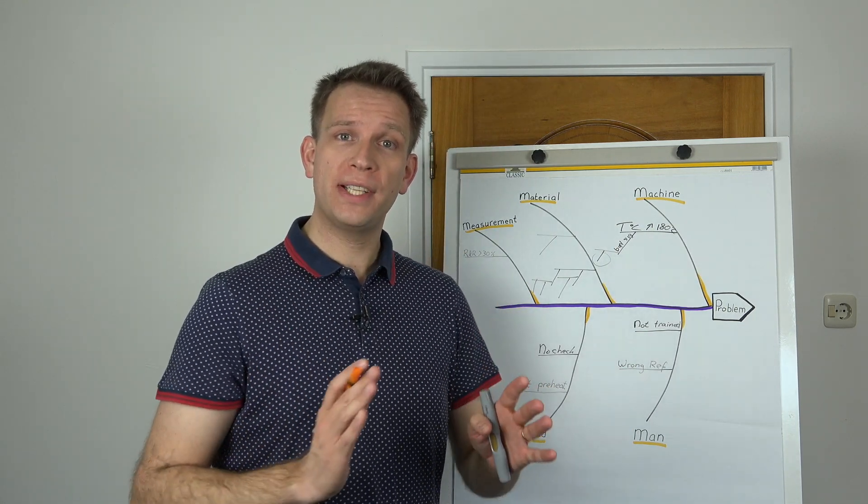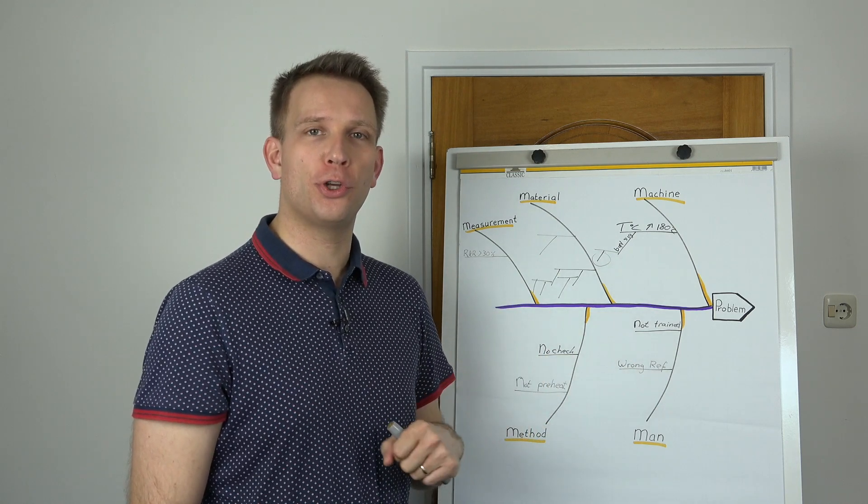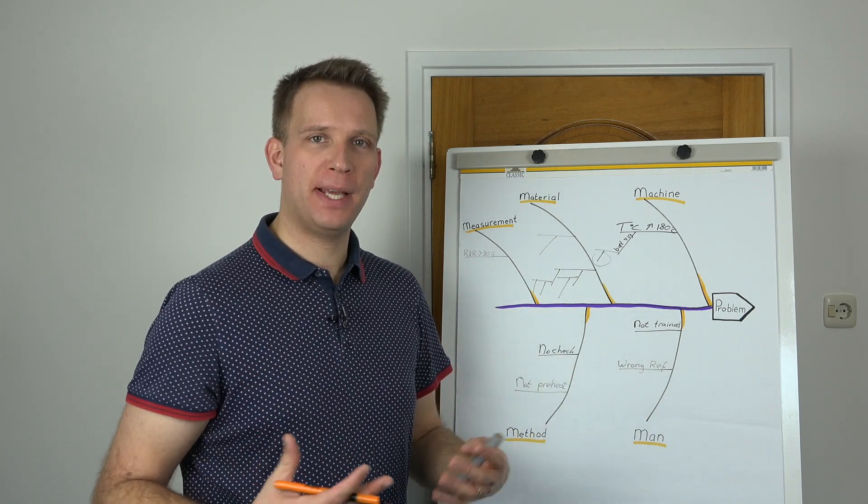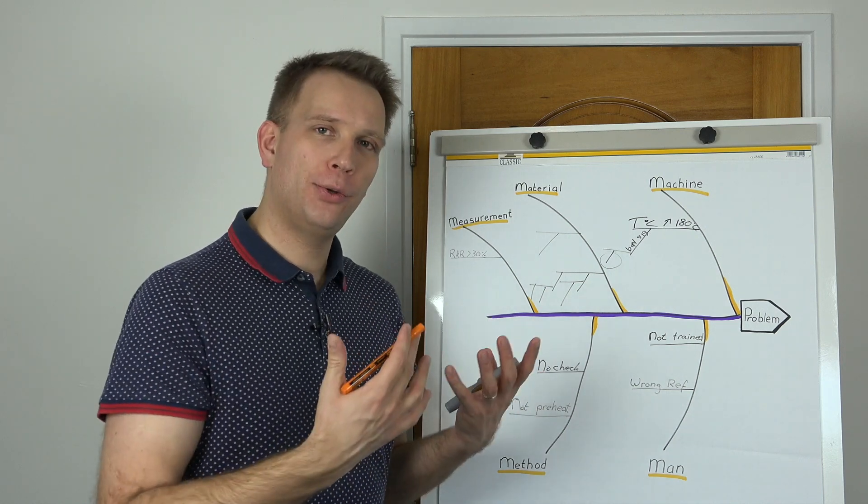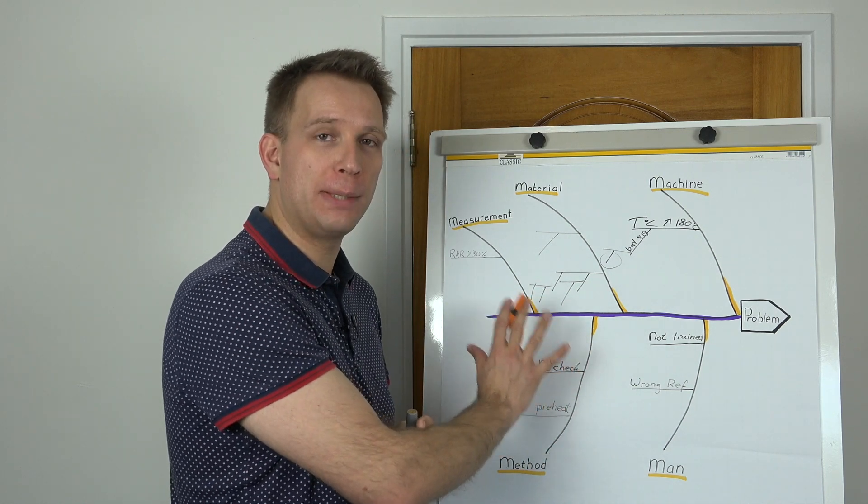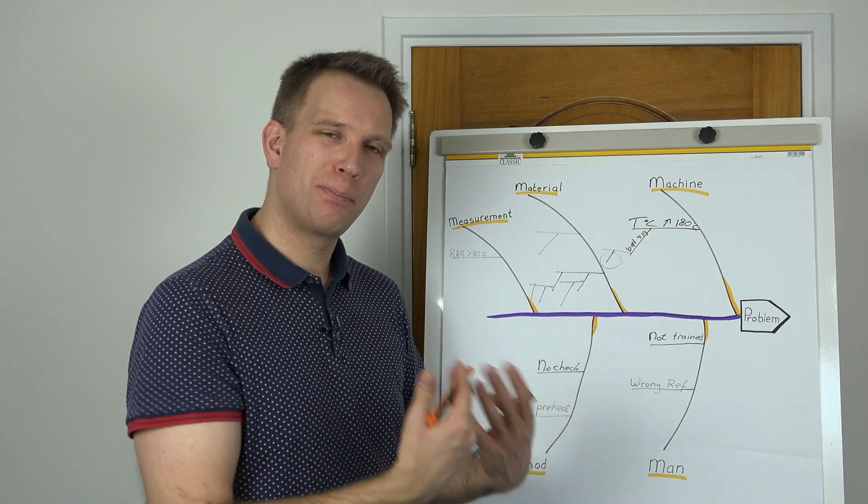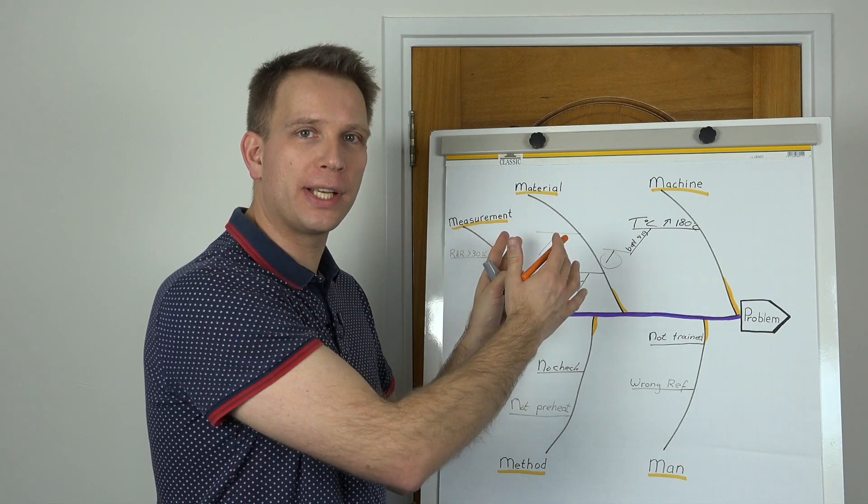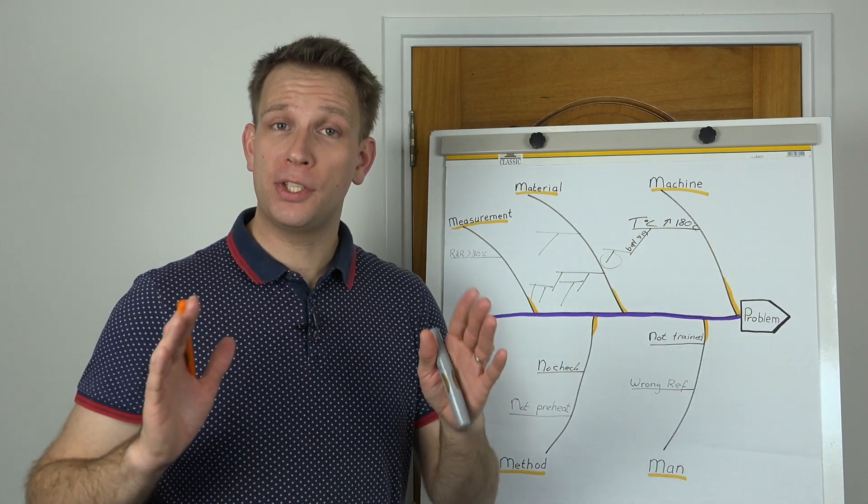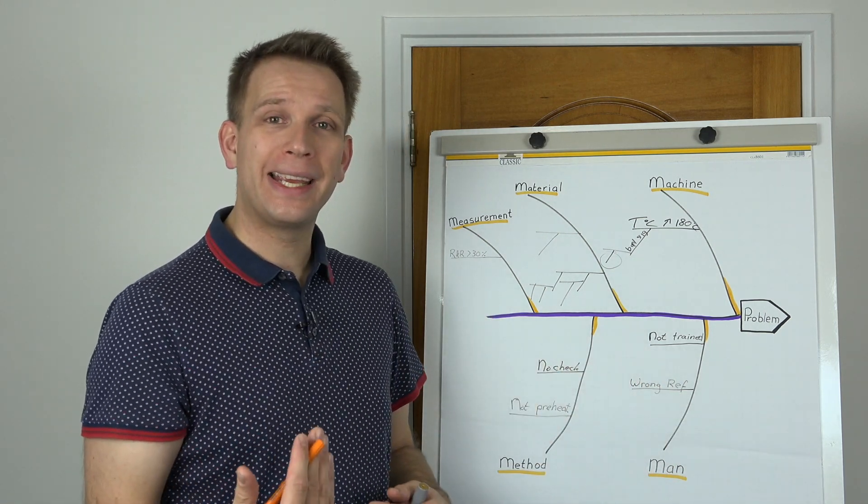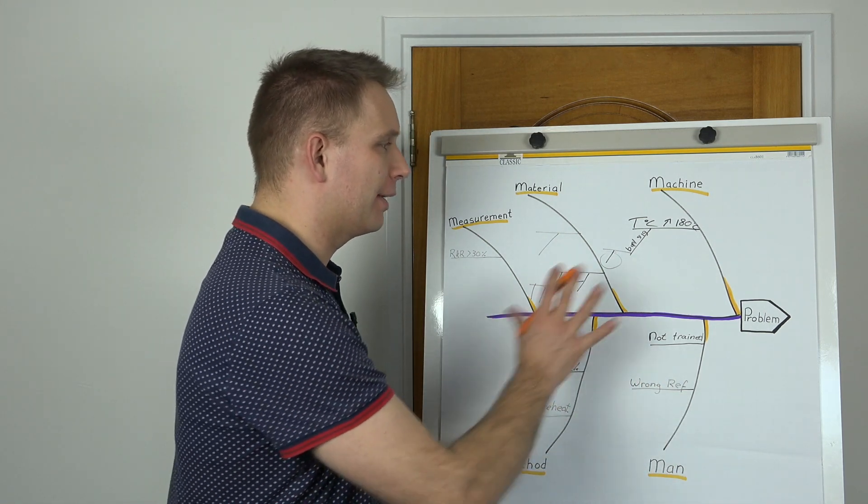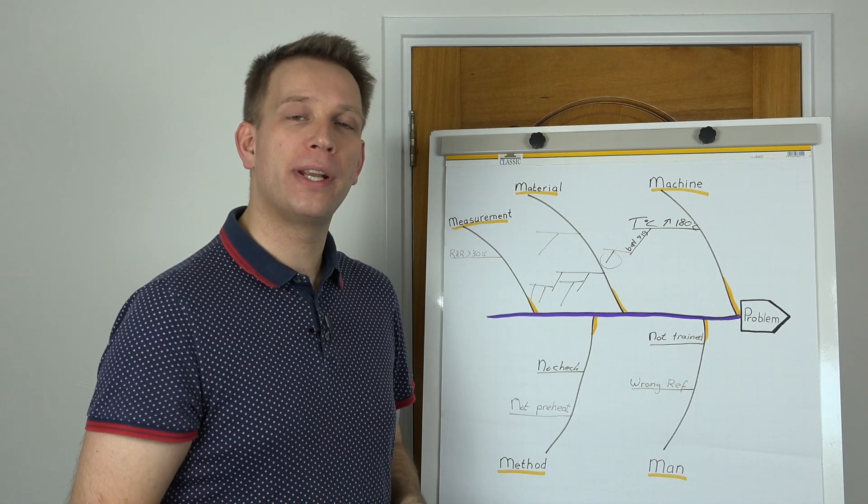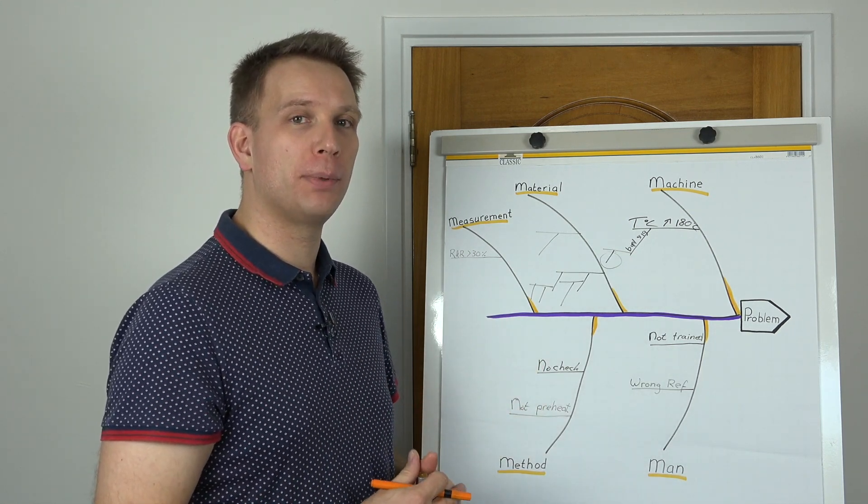So where is a good place for this diagram in your root cause problem solving? That's to get your team of experts to really think about different aspects of the same problem. If you see that your team comes up with a lot of method themed causes, you can push a little bit more. Is there really nothing that our people are doing wrong or that the material is causing this problem? So go through the categories. And what I suggest is that you just go round and round in your group of participants and just let them add something. But as a facilitator you specifically ask about the category that has only a very few number of potential causes.